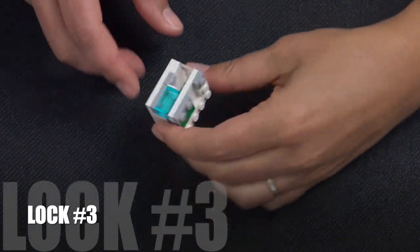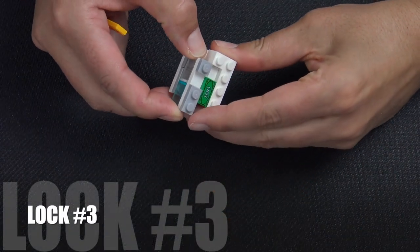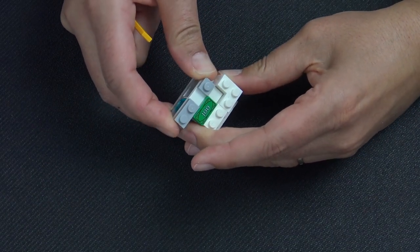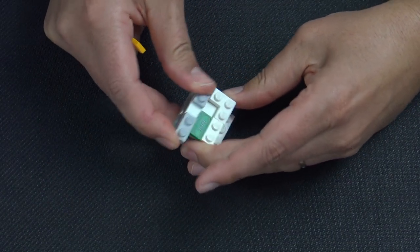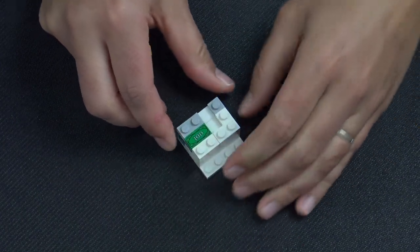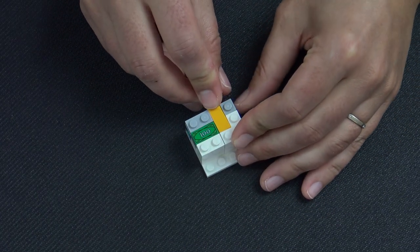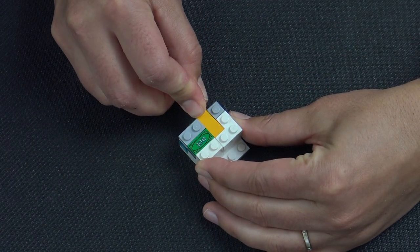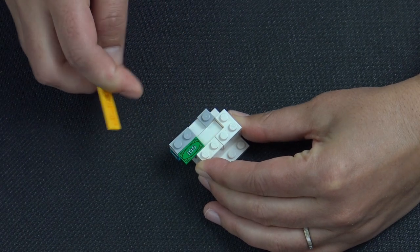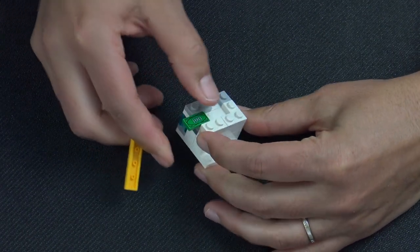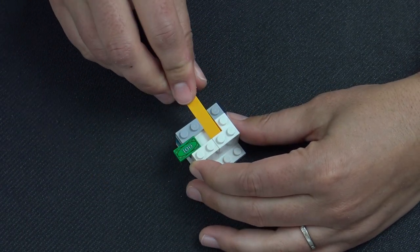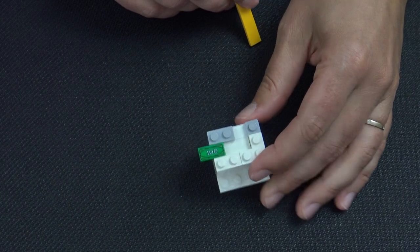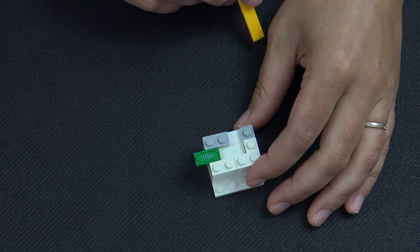Lock number three. This one has a sliding side and it doesn't appear that there's any way to get the money, but if I insert my tool into that side right there and I then slide it, now my money has been released. So this one you use the tool to help slide the money out, and this one was used in the puzzle box Toya.